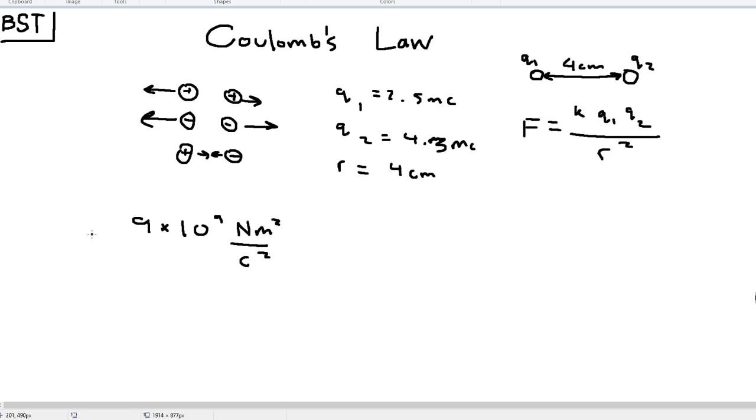We're solving for electrostatic force, so F equals Coulomb's constant times Q1 and Q2. 2.5, and since it's in microcoulombs, we can convert it into normal coulombs, and the micro-to-normal conversion is 10 to the negative 6th.